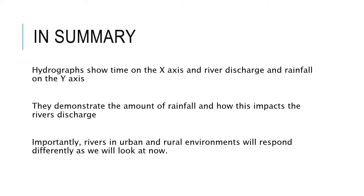To summarise: hydrographs show time on the x-axis and river discharge and rainfall on the y-axis. They demonstrate how the amount of rainfall impacts the river. Importantly, rivers in urban and rural environments will respond differently, and I'm going to show you this now.